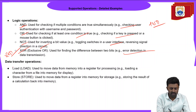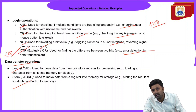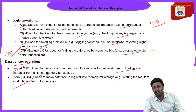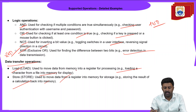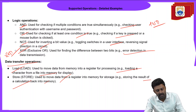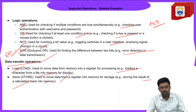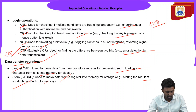For data transfer operations, we have two operations: load and store. The load operation is used to move data from memory into a register — for example, loading a character from a file into memory for display. The store operation means storing information into memory — it is used to move data from a register into memory for storage purposes. An example is storing the result of a calculation back into memory.